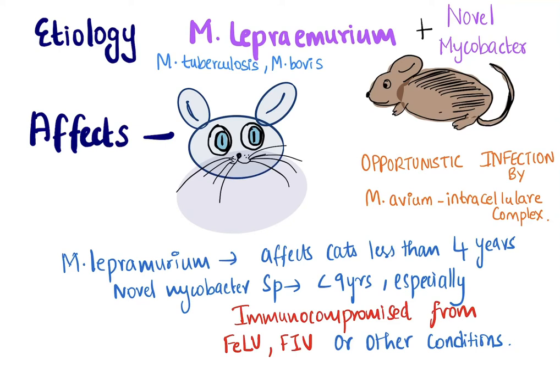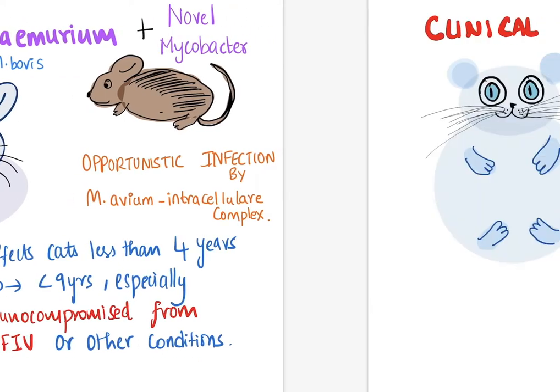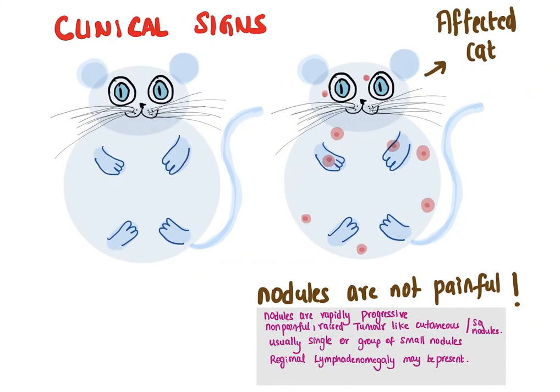Commonly, cats less than four years have been documented to get this infection more. Cats that are immunocompromised from chronic ailments due to viral infections like FeLV, FIV, or other metabolic conditions can also get this infection.